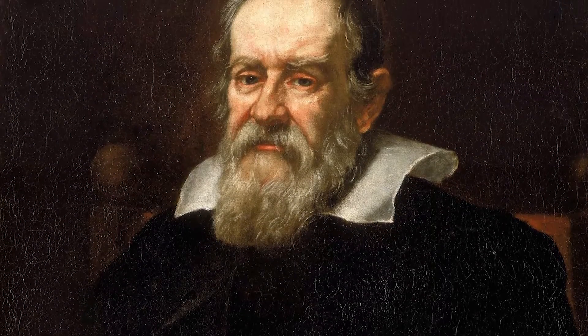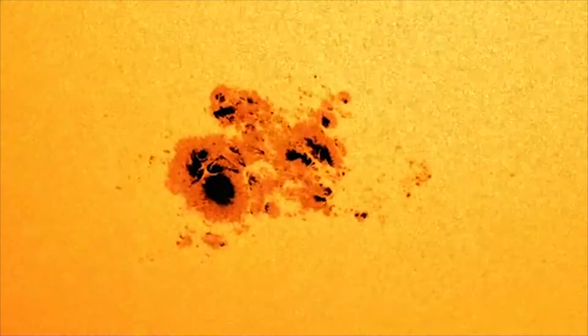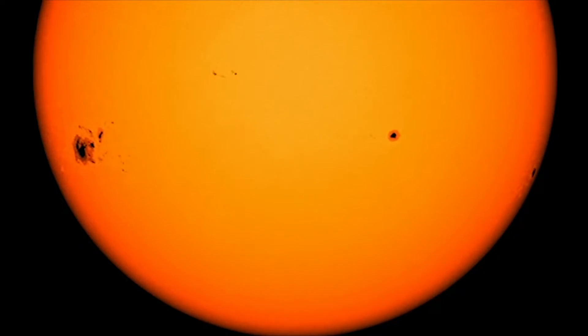It was Galileo Galilei who in 1612 observed sunspots moving across the Sun's disk over time, therefore confirming the Sun's rotation.